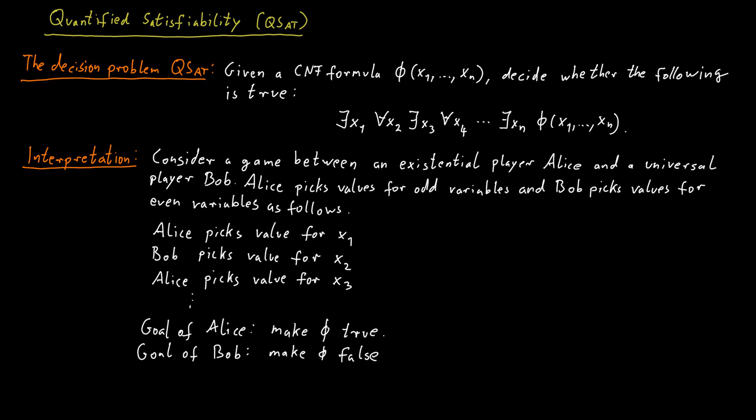Bob's goal is to make the formula false. So he wants to prevent Alice from winning this game. So he picks the values for x2, x4 and so on in such a way that hopefully will make the formula false in the end. And the question now is whether Alice has a winning strategy in this game. Can Alice force the formula to be true in the end, no matter what Bob does?